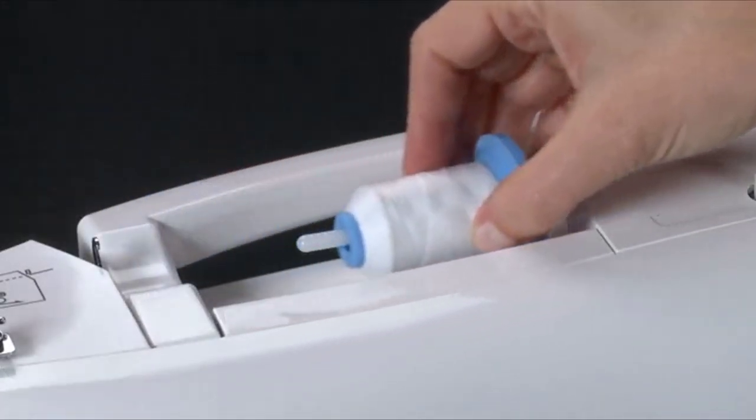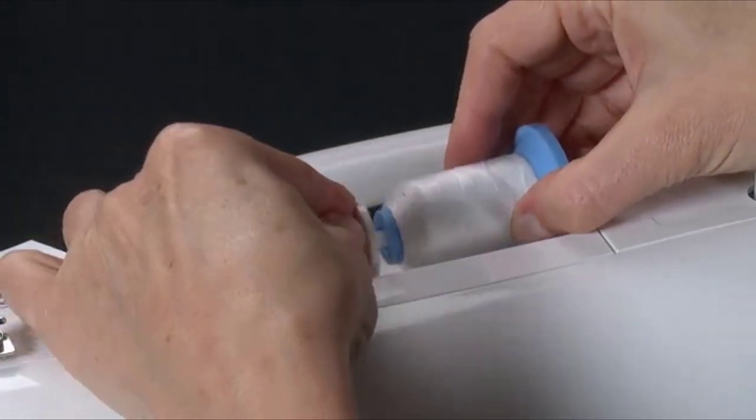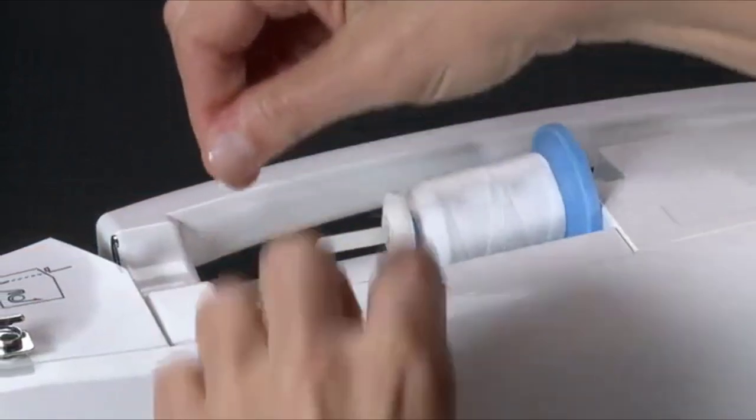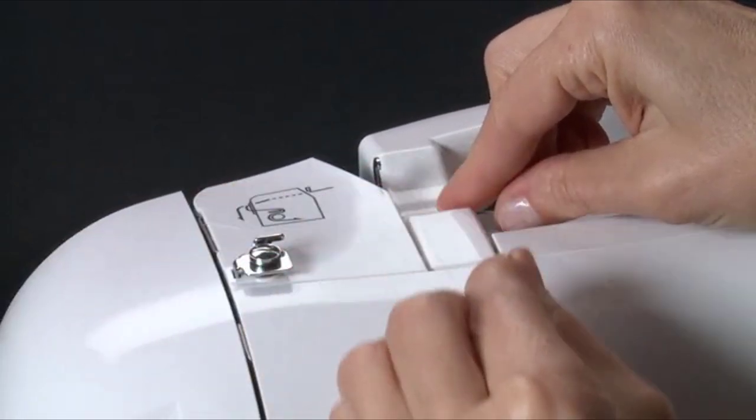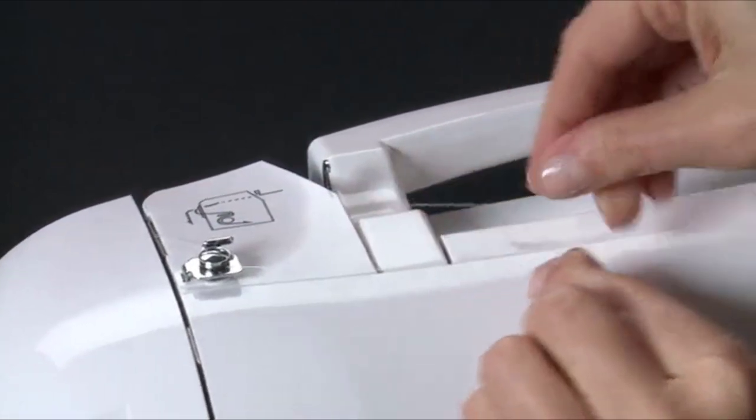Place the thread spool onto the spool pin and secure it with the appropriately sized spool cap. Pull the thread out from the spool and place it through these thread guides. First in front of this guide, then into this guide, and then around the bobbin winding tension disc.